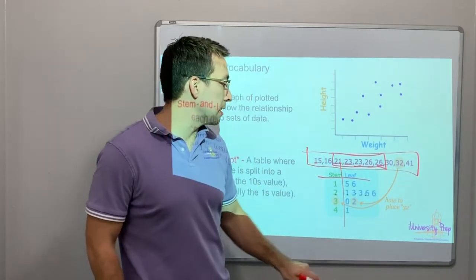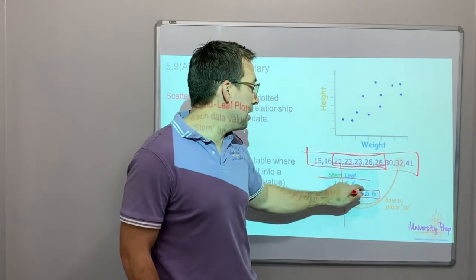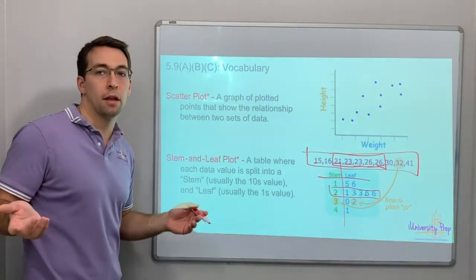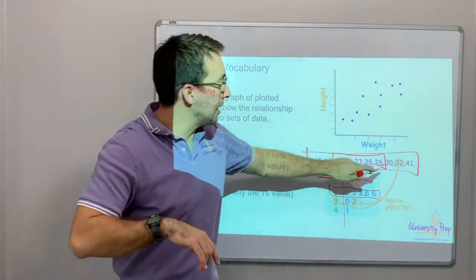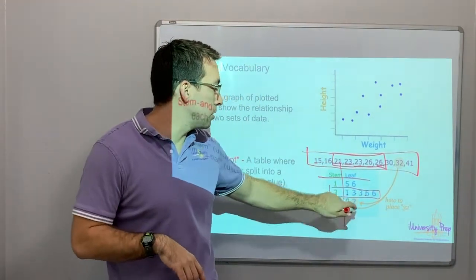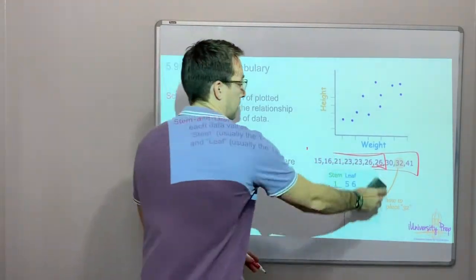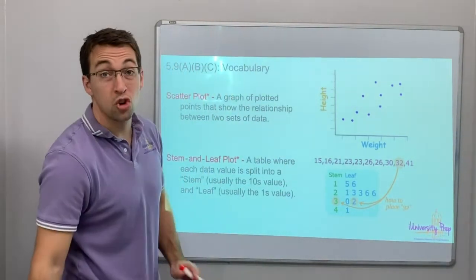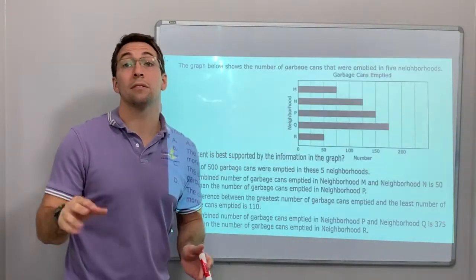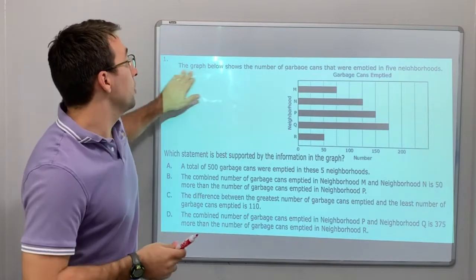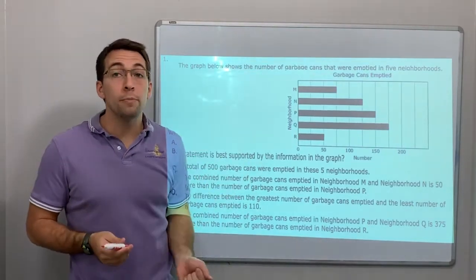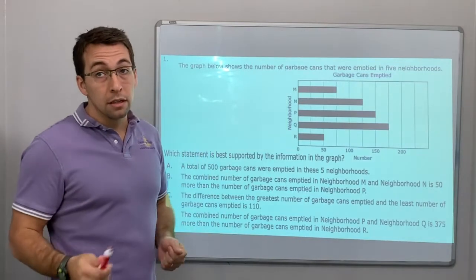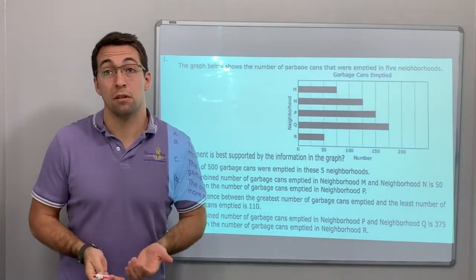So that's how we read or create a stem and leaf plot. And it highlights an orange 32. Notice how it's written 3-2 here. We got two questions and then our next video is going to have four questions. The graph shows the number of garbage cans that were emptied in five neighborhoods.